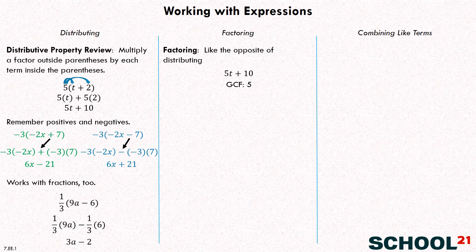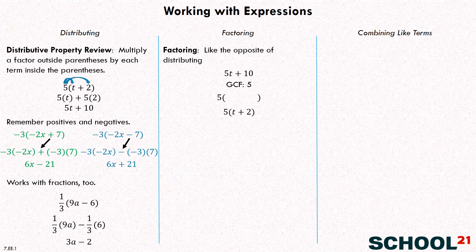So the greatest common factor of those two terms is five. We're going to have an expression that looks like five times the quantity something. If we factor the five out of five T, what do we have left? T. And if we factor the five out of ten, what do we have left? Two. So we can write this as five times the quantity T plus two. We've just moved in the opposite direction — from five T plus ten, found the greatest common factor, and got five times the quantity T plus two.